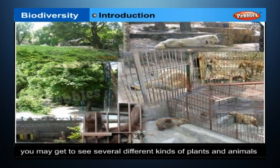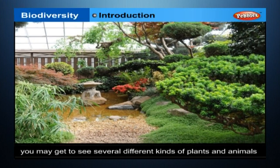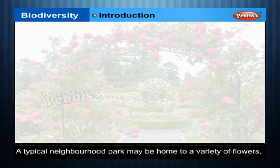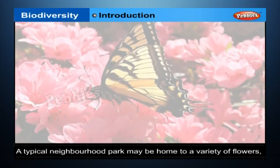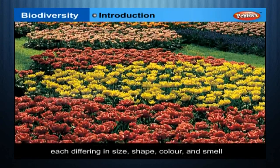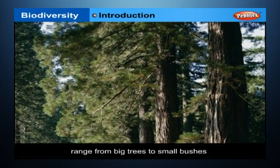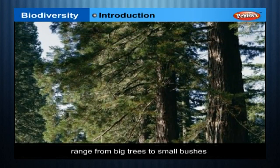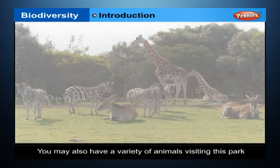If you look around you, you may get to see several different kinds of plants and animals. Let's take the example of your neighbourhood garden or park. A typical neighbourhood park may be home to a variety of flowers, each different in size, shape, colour and smell. The kind of trees found here could range from big trees to small bushes. You may also have a variety of animals visiting this park.